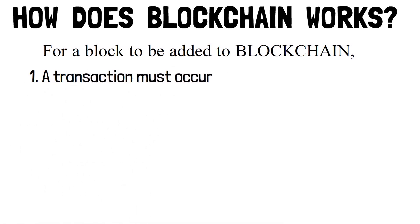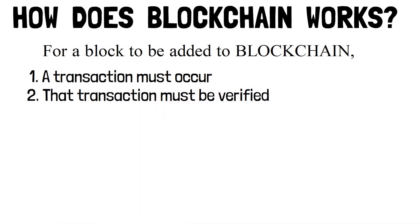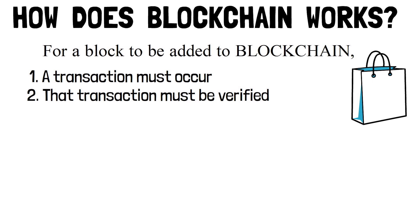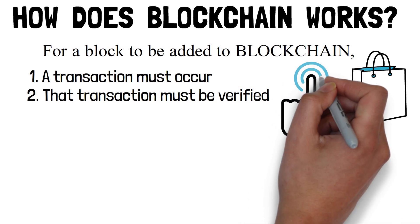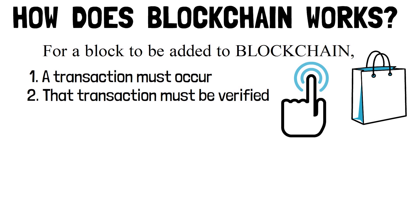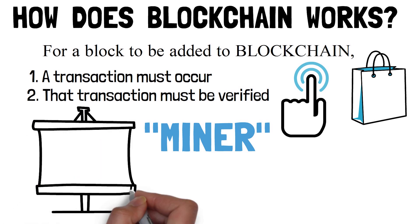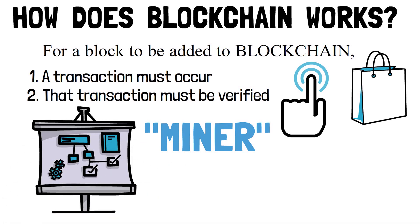1. A transaction must occur. 2. That transaction must be verified. What does verified mean? Continuing with our Amazon example: after making a purchase, your transaction must be verified with other public records of that information. With blockchain, that job is left up to a network of other blocks and someone designated as a miner. When you make your purchase from Amazon, that network of blocks rushes to check that your transaction happened the way you said it did — confirming the details including the transaction's time, dollar amount, and the participants.